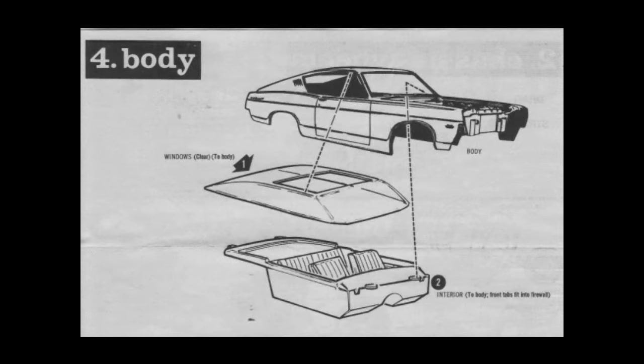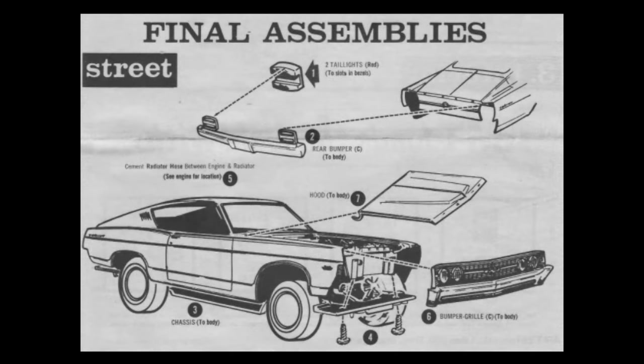The window glass was a solid casting that included windshield, side windows, and a rear window. The chassis screwed into the radiator support wall and the body featured the rear taillight panel as a molded-on piece with taillight housings and a rear bumper being the only chrome parts back there.